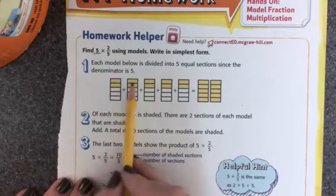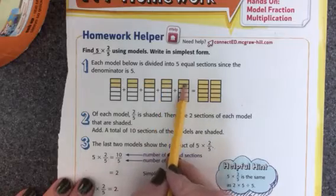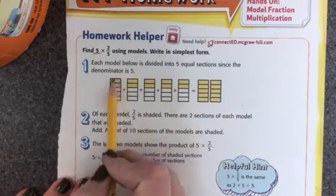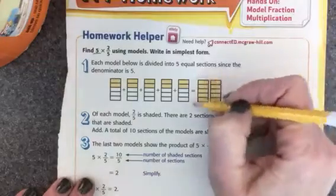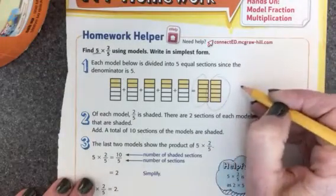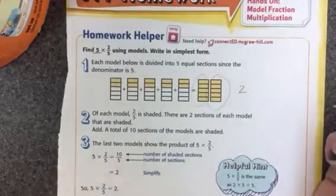When we have two-fifths here five times, we take each of those, combine them. This is a whole and this is a whole. So this makes two wholes.